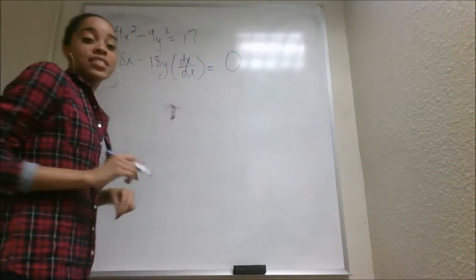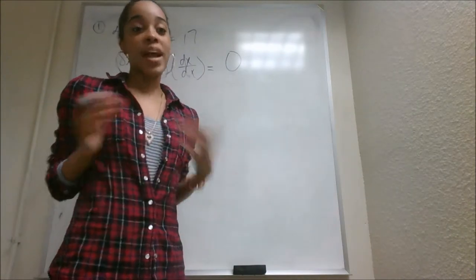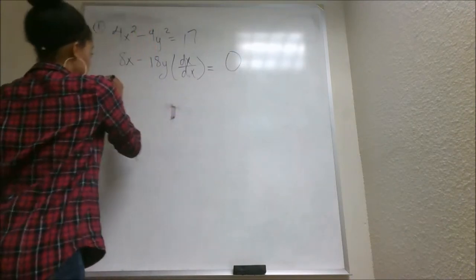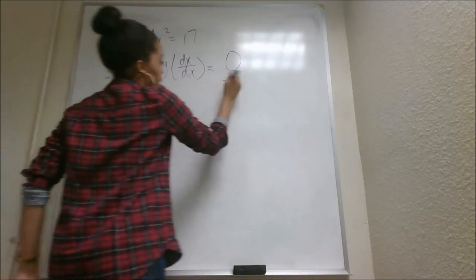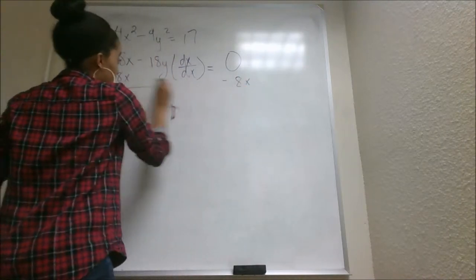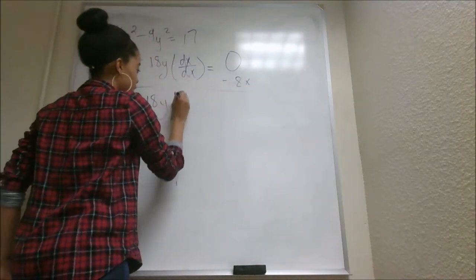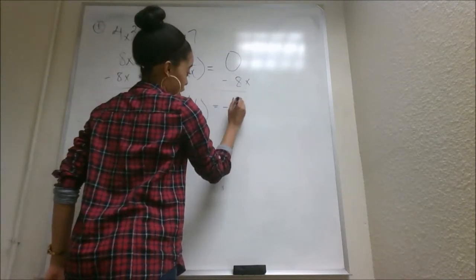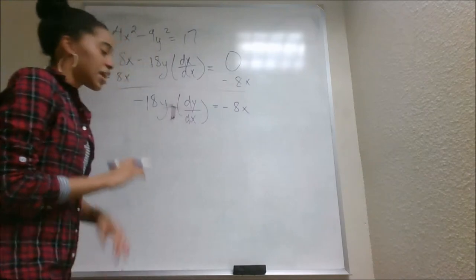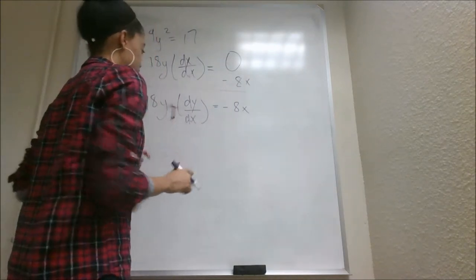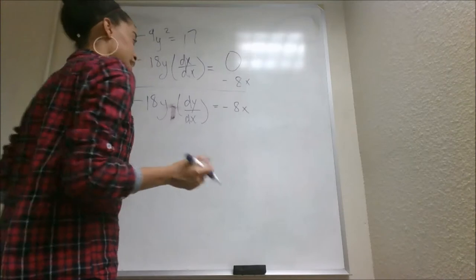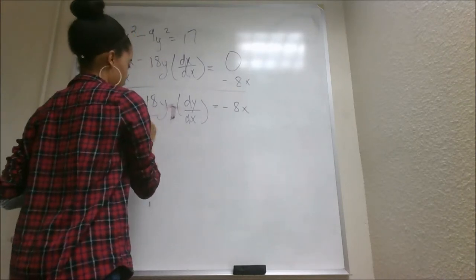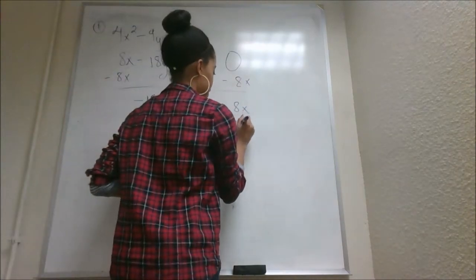So like I said, in our second step, you always want to get dy dx by itself. So what we can do here is move this 8x to this side by subtracting it. So negative 8x, negative 8x. That leaves us with negative 18y dy over dx equals negative 8x. Now, what else can we do to manipulate this equation to get dy dx by itself? What we can do is divide it by negative 18y.